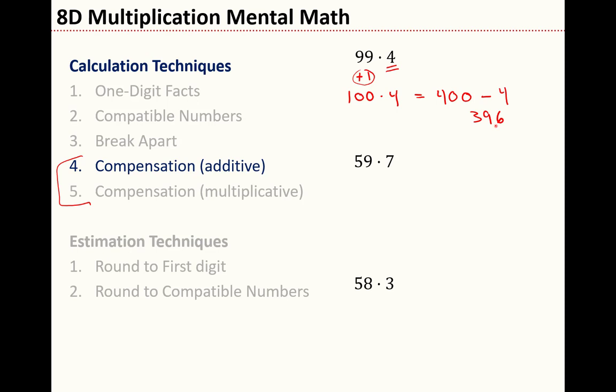What about the next problem? 59 times 7. 59 is very close. I can just add 1 to get a 60. And 60 times 7 is pretty easy. 6 times 7 is 42. 420. But how much do I need to subtract? I've over-multiplied. So I added 1 to get the nice number, but that adding 1 was magnified 7 times. So I need to subtract off 7 in this case. 413.